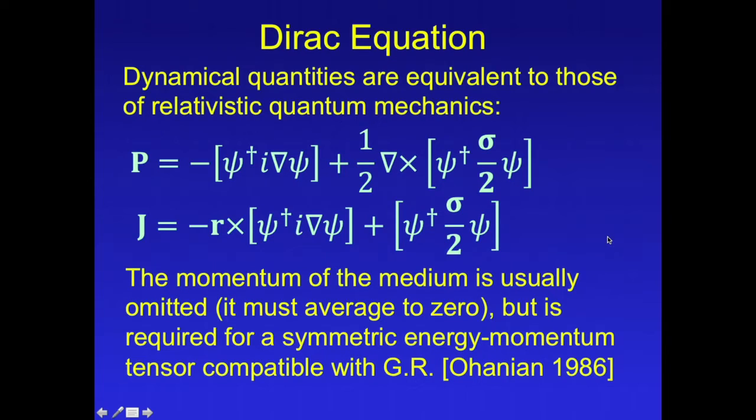We can calculate the conjugate momentum and conjugate angular momentum from the Lagrangian, and this is the result here. It's essentially identical to the result from relativistic quantum mechanics. The only difference is that here we have the momentum of the wave plus the momentum of the medium, and for angular momentum we have the angular momentum of the wave, the orbital angular momentum, and the spin angular momentum of the medium. And normally the momentum of the medium is ignored in quantum mechanics.